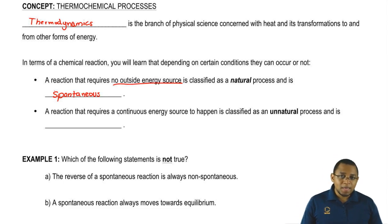On the flip side, let's say we have a reaction where we have to continuously feed it energy in order for it to occur. If you're supplying a continuous amount of energy to something, we're going to classify it as a non-spontaneous reaction. Non-spontaneous reactions are unnatural. They constantly need energy for them to occur.